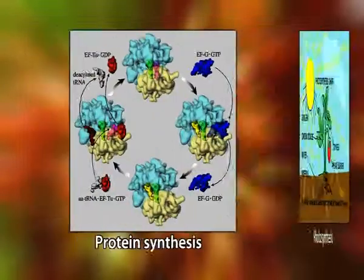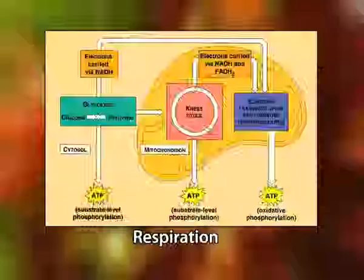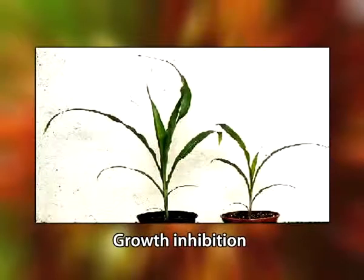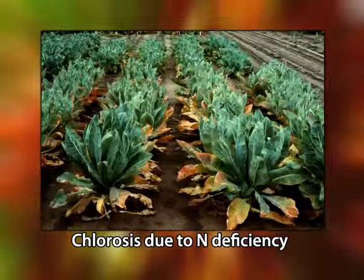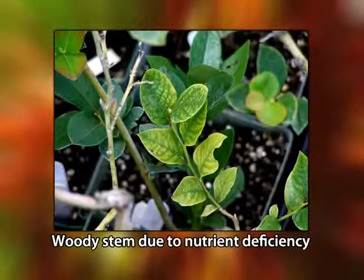Nitrogen plays an important role in photosynthesis, protein synthesis, respiration, growth, and almost all metabolic reactions. Nitrogen deficiency rapidly inhibits plant growth. If the deficiency persists, most species show chlorosis — yellowing of leaves — especially in older leaves near the base of the plant. Under severe nitrogen deficiency, leaves become completely yellow and fall off. When nitrogen deficiency develops slowly, plants often develop woody stems due to a buildup of excess carbohydrates that cannot be used in amino acid synthesis.